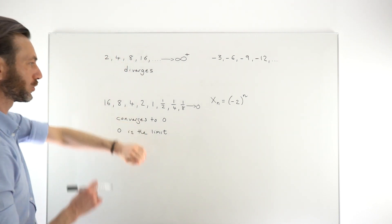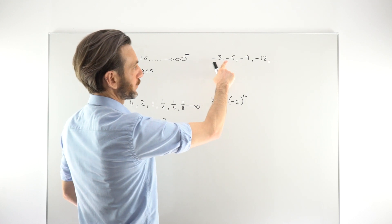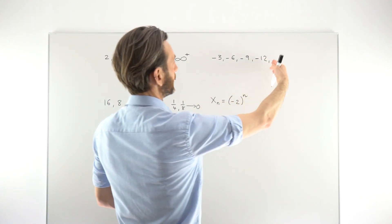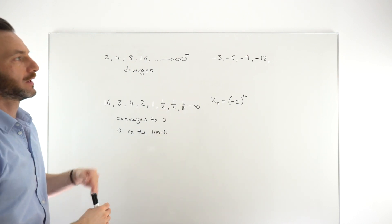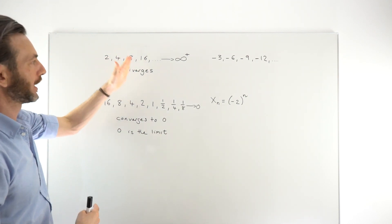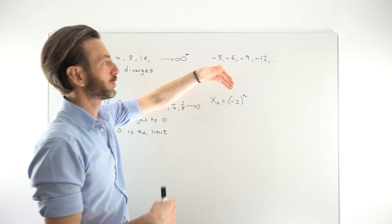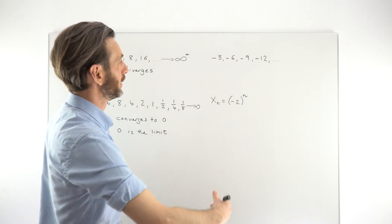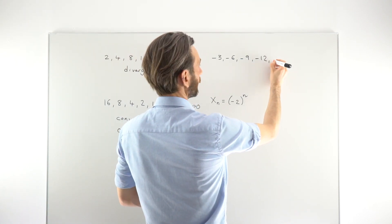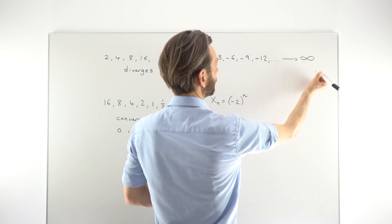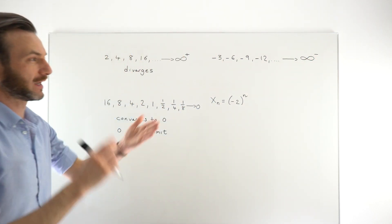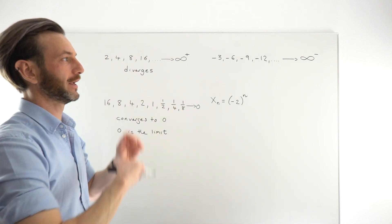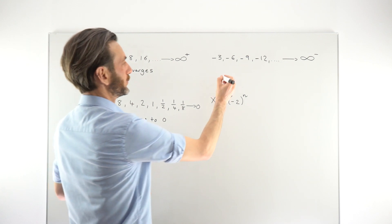So that first one was divergent; this second one is convergent. Now this third sequence: we're subtracting 3 every time, so it's getting progressively more negative — minus 15, minus 18, minus 21 — just getting more and more negative. It's not as fast as the geometric doubling sequence, but it's just going to carry on indefinitely. So this one is also going to tend to infinity, but this time it's negative infinity. That one is also divergent.